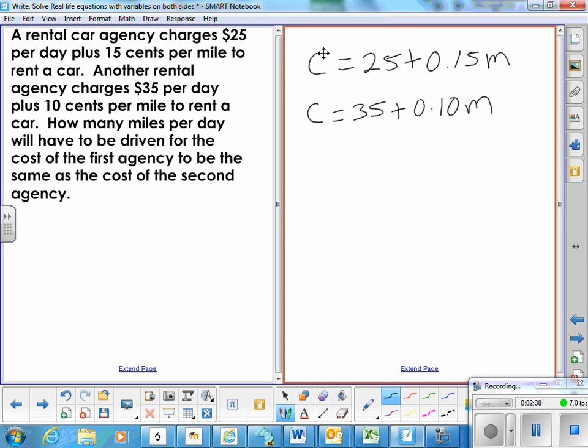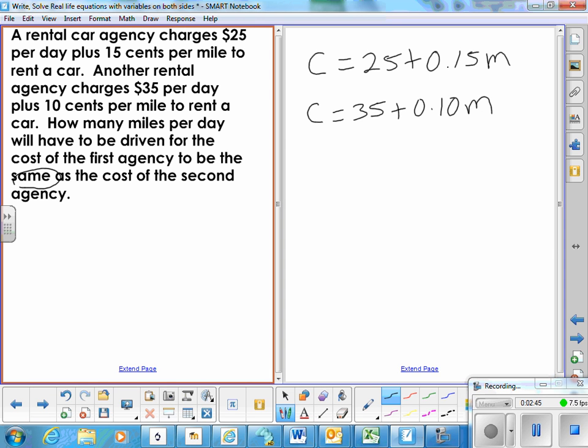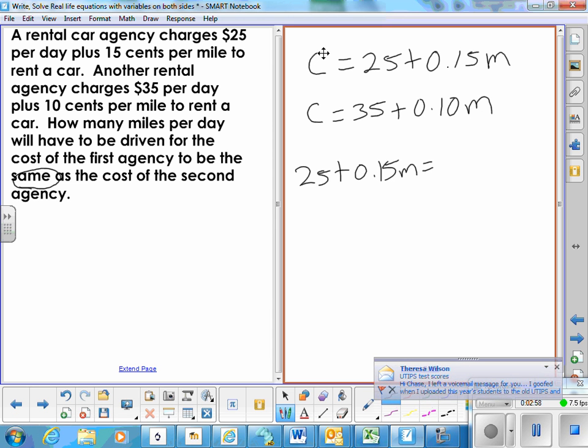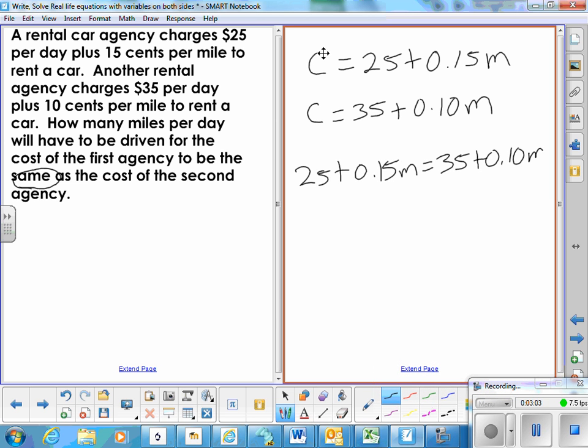Now, the place where those two are equal for the cost to be the same, we can set those two costs equal to each other. So $0.25 plus $0.15 per mile is equal to $0.35 plus $0.10 per mile. So the top equation is equal to the second equation. Put them into one equation.